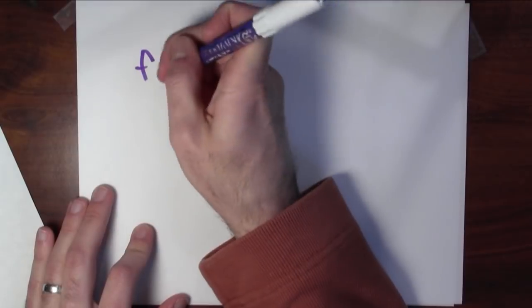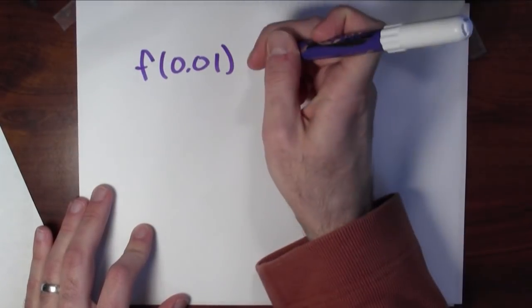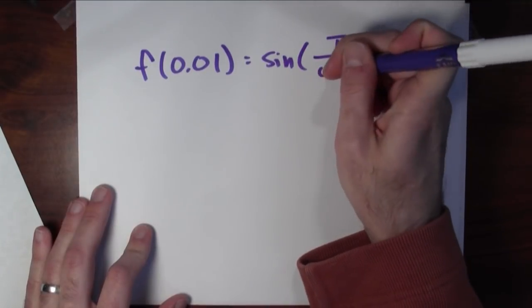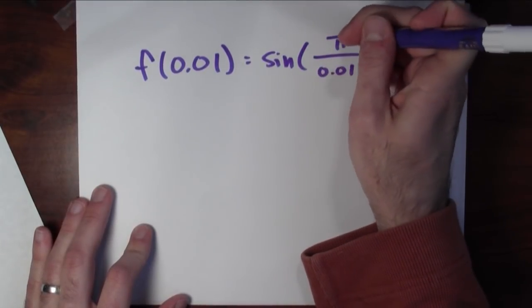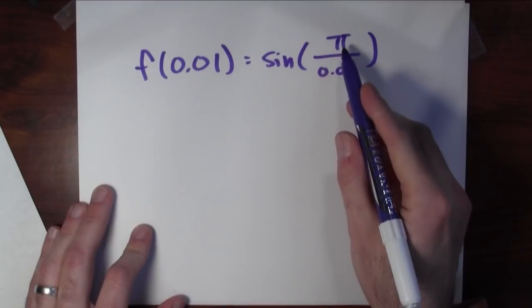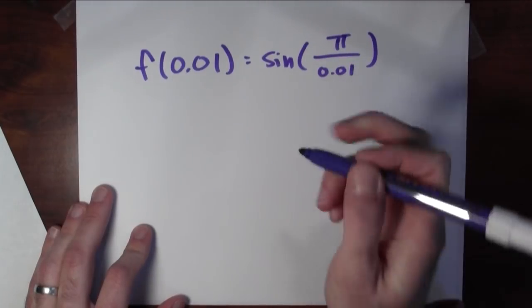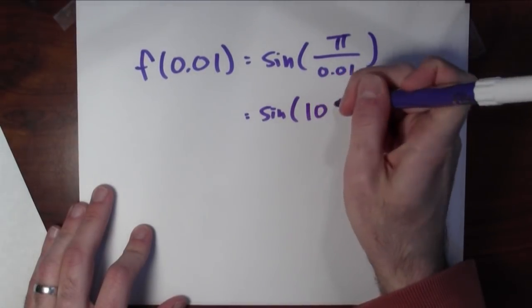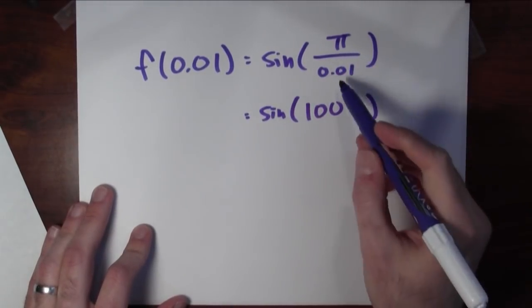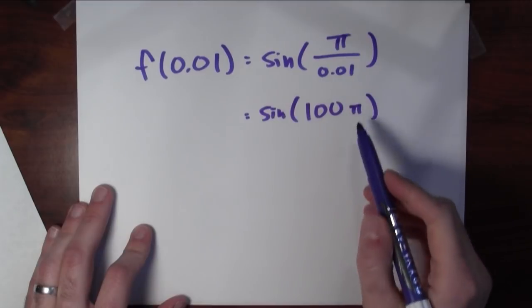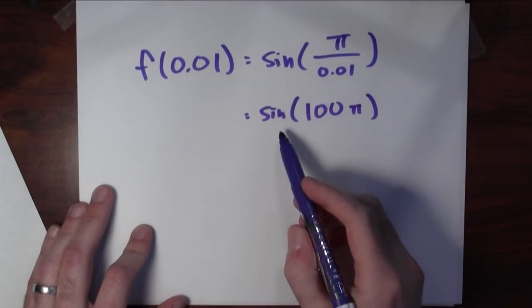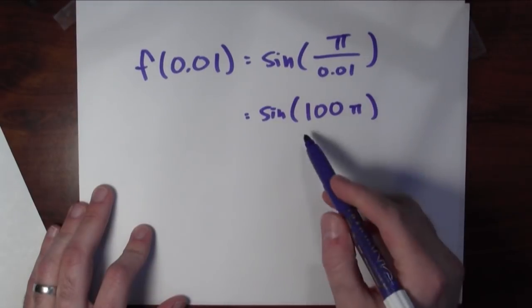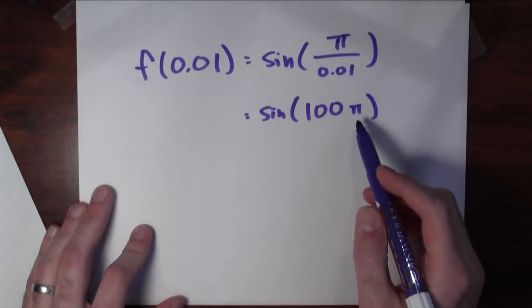What is f of 0.01? Well, it's the same as sine of pi divided by 0.01. Now here I'm taking pi and I'm dividing it by 0.01. That's the same thing as multiplying by a hundred. I'm dividing by a hundredth. That's the same as multiplying by a hundred. So this function at 0.01 is sine of 100 pi.